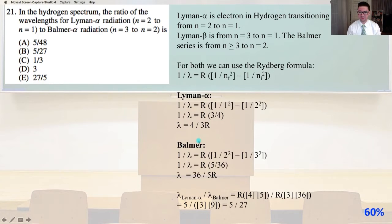So the Lyman alpha is where the electron is transitioning in hydrogen from n equals 2 to n equals 1, and the Lyman beta is from n equals 3 to n equals 1. The Balmer series is from n greater than or equal to 3 to n equals 2.